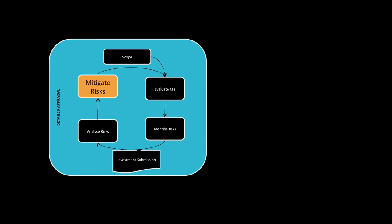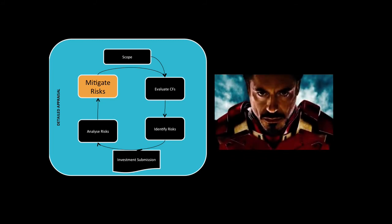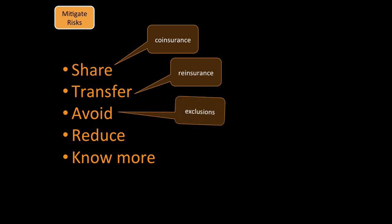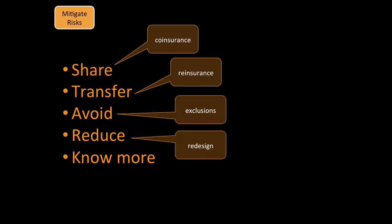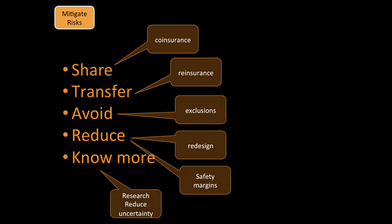Mitigating the risks. Tony Stark Stock can come to the rescue. You can share, you can transfer, you can avoid, you can reduce, and you can know more. Share by coinsurance, transfer through reinsurance, avoid through exclusions or redesign that can also reduce, and know more by researching. You can also reduce with safety margins.